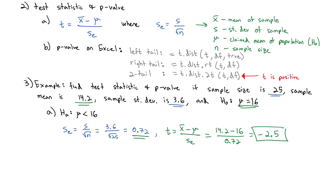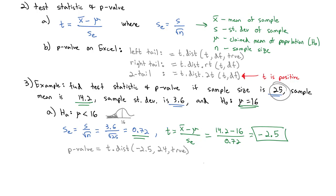To calculate the p-value, we decide if we're doing a left, right, or two-tailed test based on the alternate hypothesis. If the alternate hypothesis is mu less than 16, we are in the left tail. Using the Excel command T.DIST with t = negative 2.5, degrees of freedom = 24 (one less than n), and TRUE, we get a p-value of 0.0098.